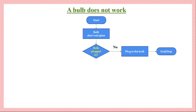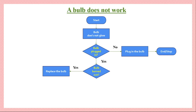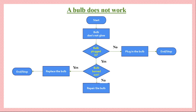If the bulb is already plugged in properly, we then check whether the bulb is burnt out or not — another decision. If the bulb is burned out, we replace it; once replaced the bulb will glow again, so that is the end of the process. But if the bulb is not completely burned out and some portion can be repaired, we go to repair that bulb. Once repaired, the bulb will again glow, and that is the end of the process.